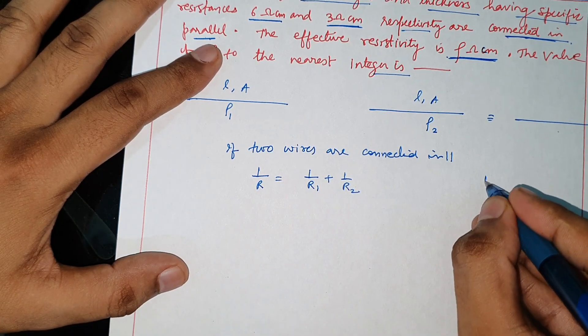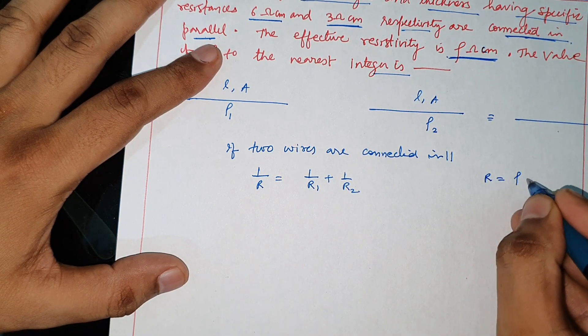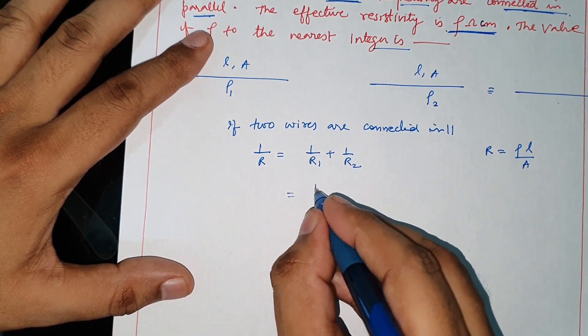So, one over R has value rho L upon A. So, R1 value put.